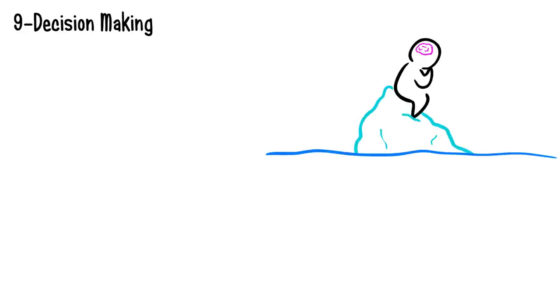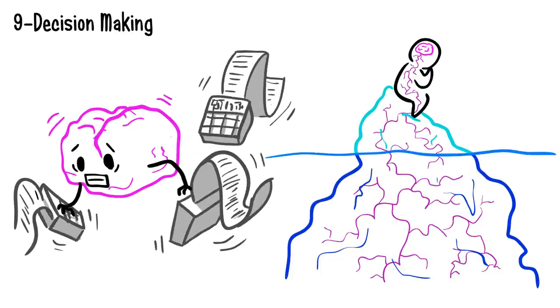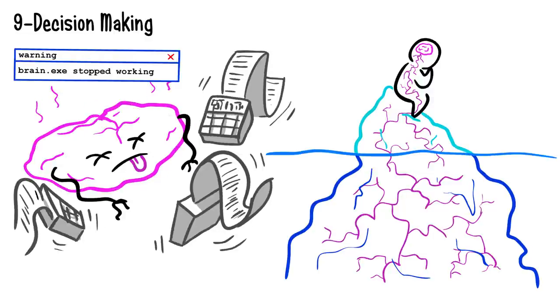Fact number nine: decision making. Have you ever wondered how you make your decisions? Well, I hate to break this to you, but most of your decisions are made subconsciously. Your brain would become overwhelmed if you consciously calculated every decision. Your brain receives loads of information per second and it simply doesn't have enough power to process it all consciously without overloading.